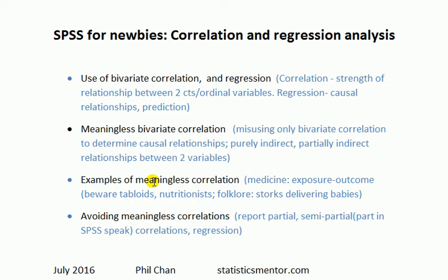Here are some examples of meaningless correlation. If you understand the misuse of bivariate correlation, you'll often spot strange claims on the front pages of tabloids or from nutritionists. In medicine there's a distinction between exposure and outcome. For example: cancer rate and income. We could guess there is a positive bivariate correlation between income and cancer — but does that mean that the richer you are, the higher your chance of getting cancer? No. That's an example of a meaningless correlation.